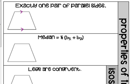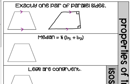A trapezoid doesn't have to look like the typical shape. This is also considered a trapezoid — a lot of people overlook this. It has the top and bottom parallel, but a trapezoid can have a right angle; this one actually has two right angles. It does not have to have two slanted sides to be a trapezoid.